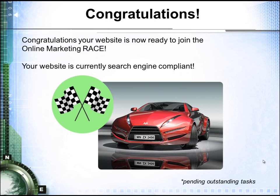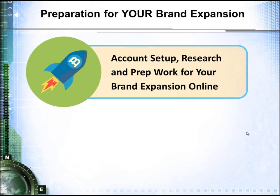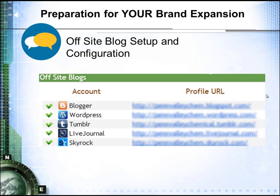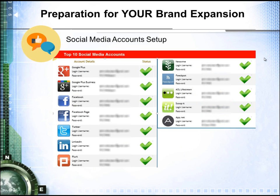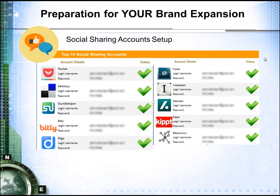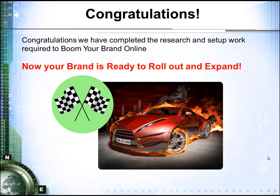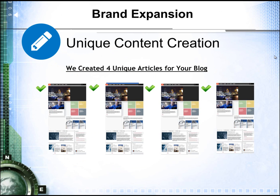At this point, congratulations — your website is now search engine compliant and you're ready to join the online marketing race. But before then, we need to set up some accounts that we can publish into to get your brand expanded. We do some research ahead of time and let you know what research we do before we set up accounts for you online and with your social media. We check for duplicates and also check to make sure that if you already have accounts set up, the information is correct about your business. To expand your brand online, we publish through what we call your brand network. We set that up by establishing the top off-site blogs, your top social media accounts, top social sharing accounts, and the initial business directories — all documented in your report. After setting those up, your brand network is established online and we're ready to expand your brand.